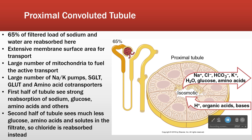You can kind of divide the proximal convoluted tubule into two halves. The first half: sodium, glucose, amino acids, and water — that's primarily what's being reabsorbed. In the second half, in the healthy human being, by the time you get there most of the glucose and amino acids are gone, so we see a lot of chloride reabsorption instead.